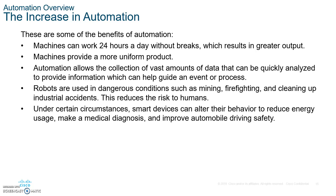Here are some of the benefits of automation: machines can work 24 hours a day without any breaks, they provide more uniform products, automation allows the collection of vast amounts of data that can be quickly analyzed, and robots can be used in dangerous conditions such as mining and firefighting. Smart devices can also alter their behavior to reduce energy usage, make medical diagnoses, and improve automobile driving.